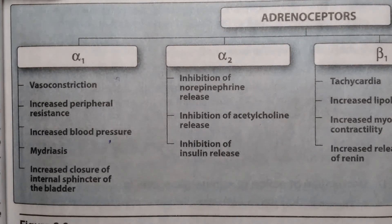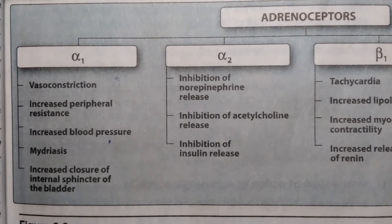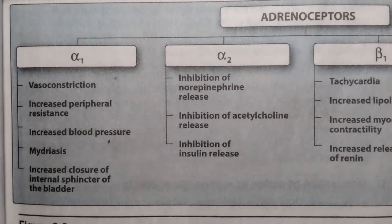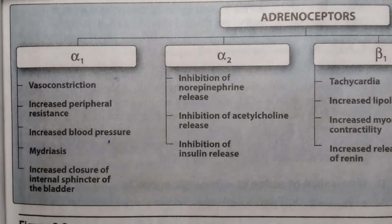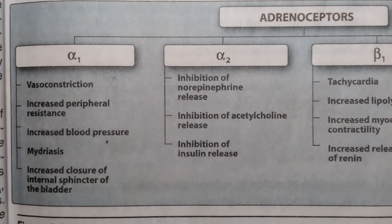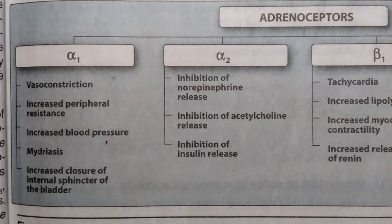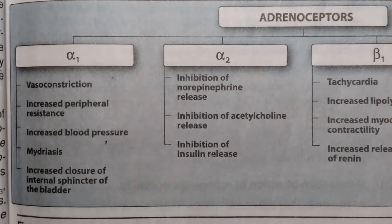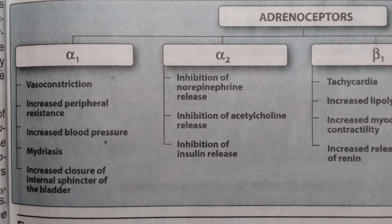Stimulation of alpha 2 receptors causes inhibition of norepinephrine release, since these receptors are present presynaptically on the nerve terminal, serving as a negative feedback mechanism. They inhibit further release of norepinephrine into the synaptic cleft, reducing its availability. Alpha 2 receptors also cause inhibition of acetylcholine release in cholinergic neurons and inhibition of insulin release.